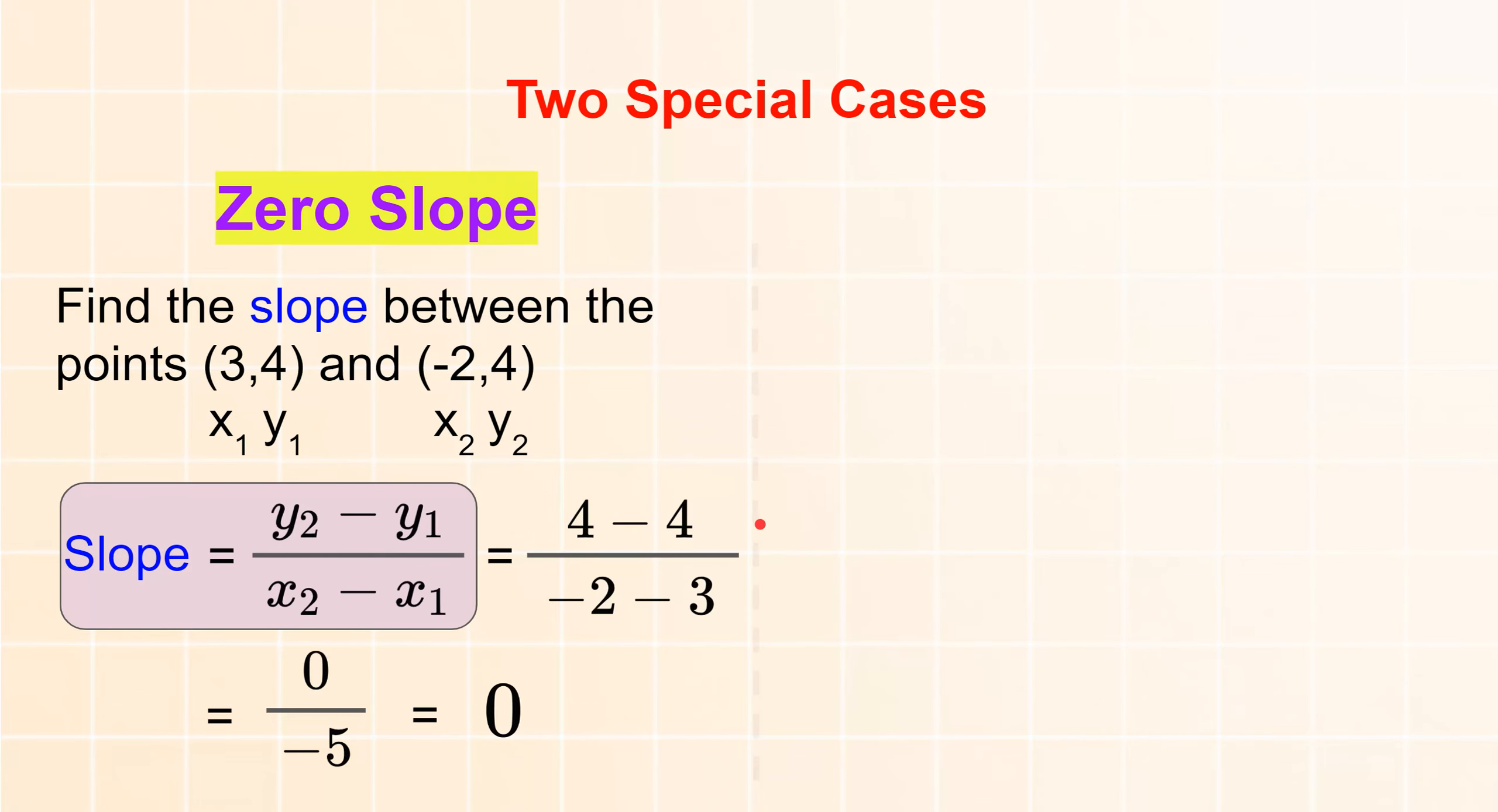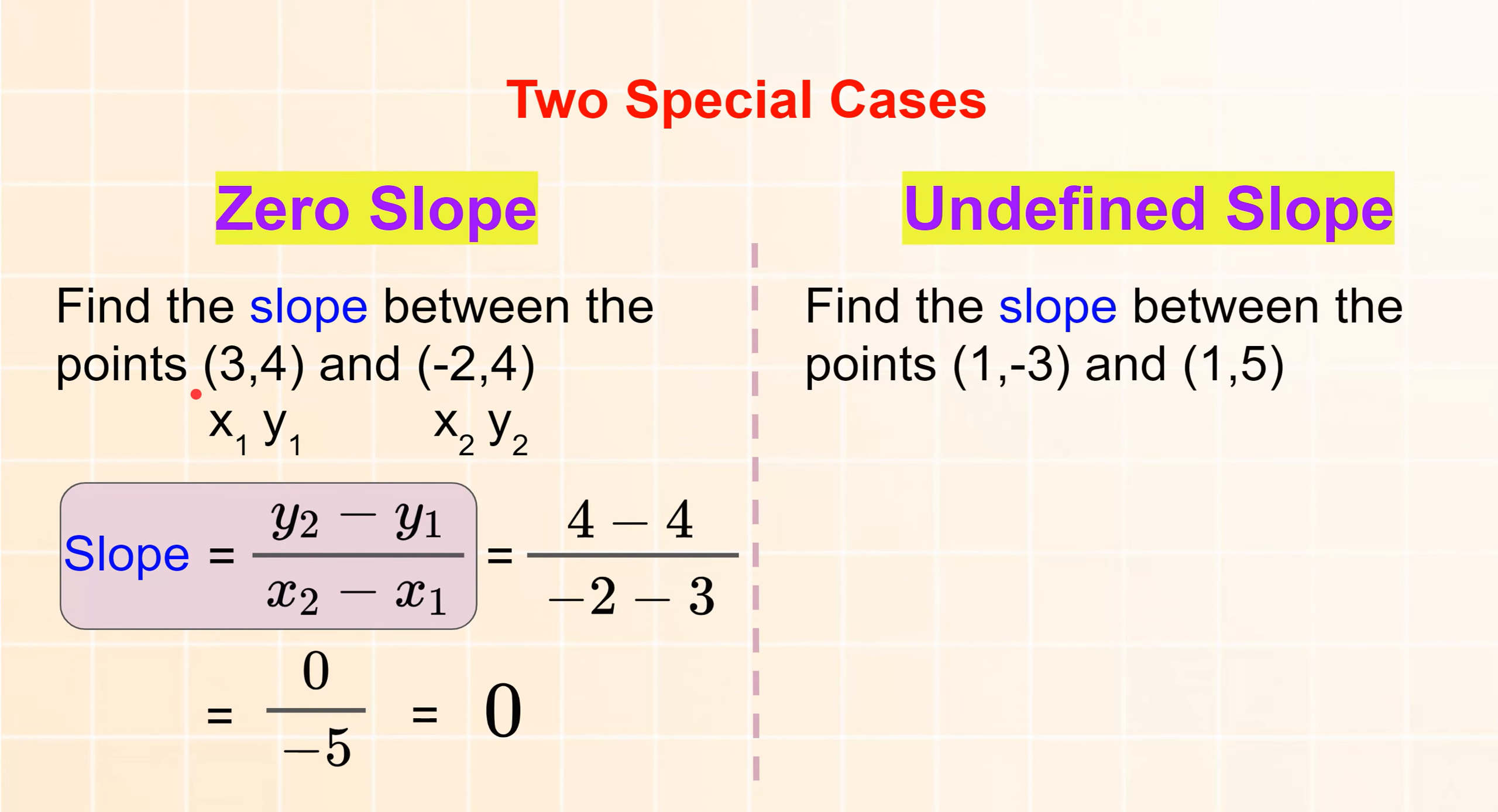Now you can guess the second case is when the x's are the same. So when you divide by 0, basically. You cannot divide by 0. So in this case, you will have 5 minus negative 3, which is 8, over 1 minus 1, which is 0.